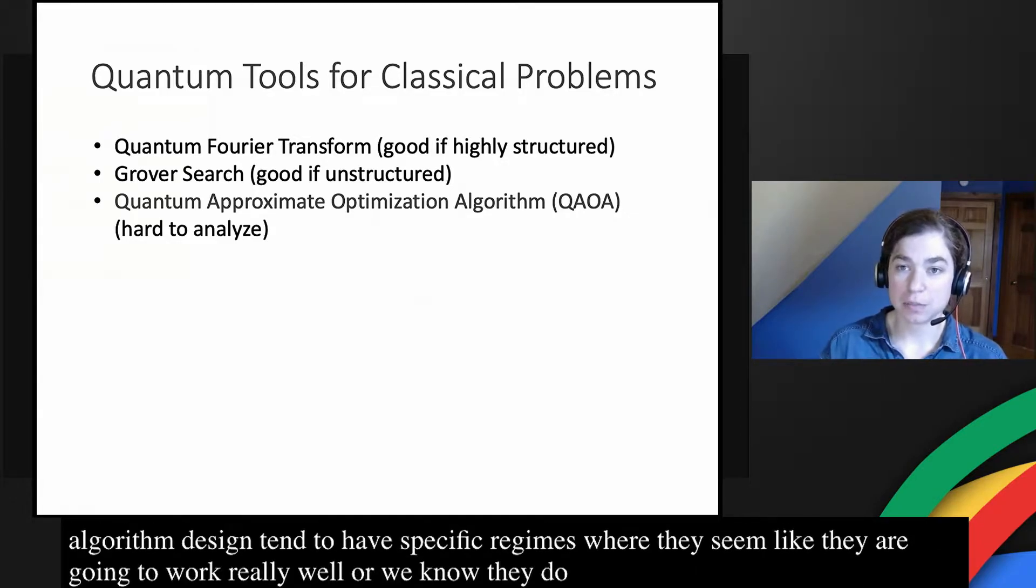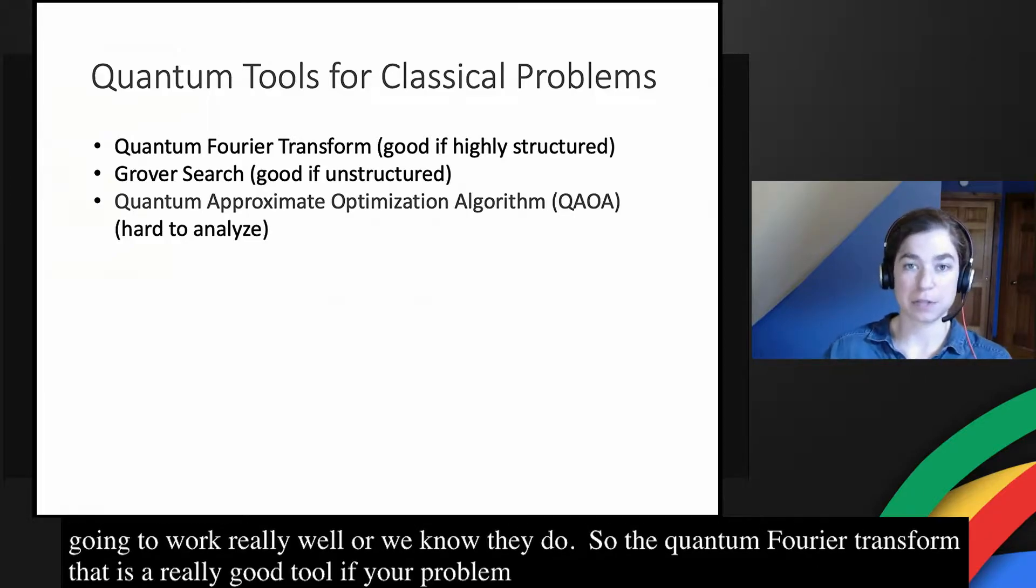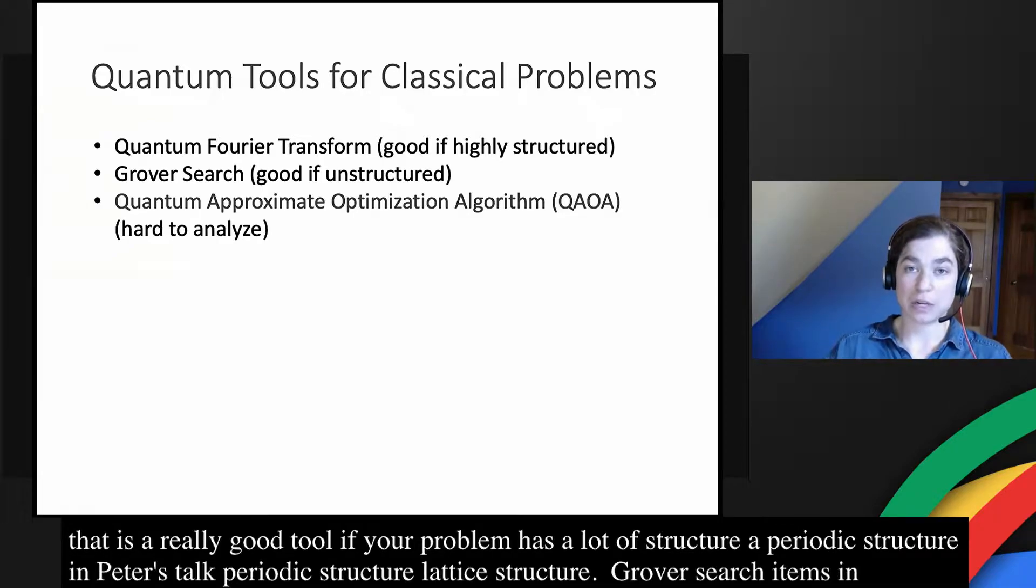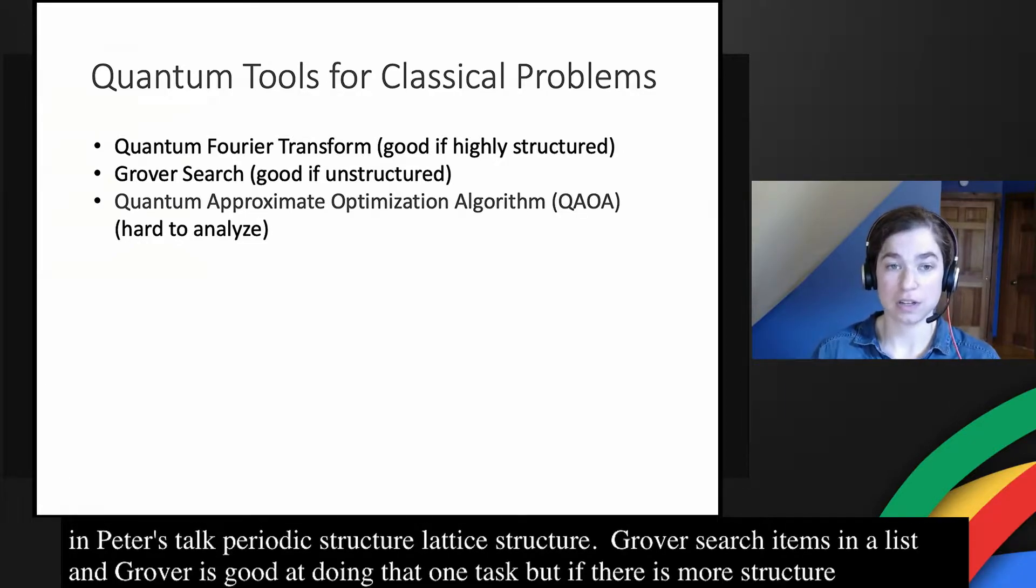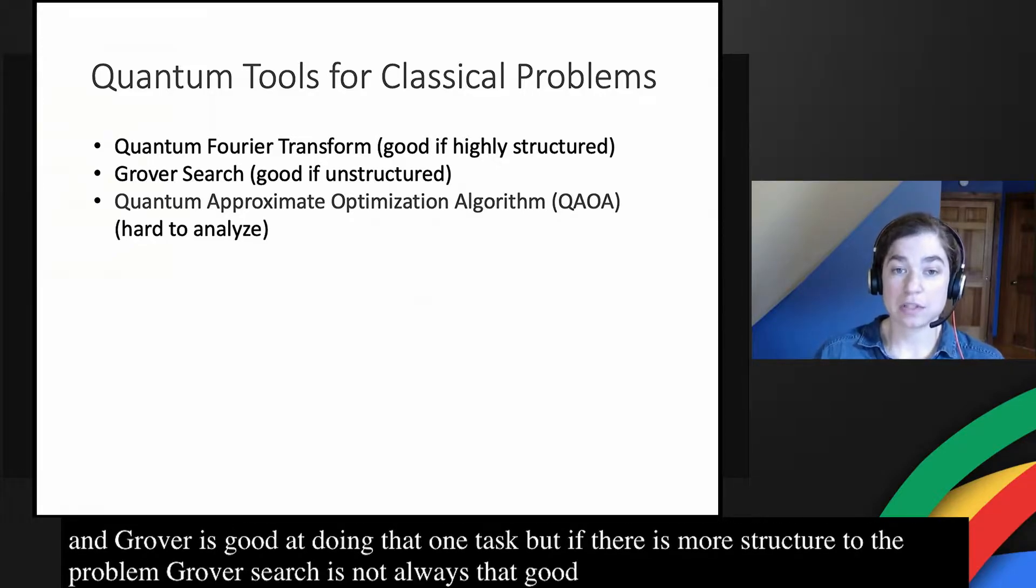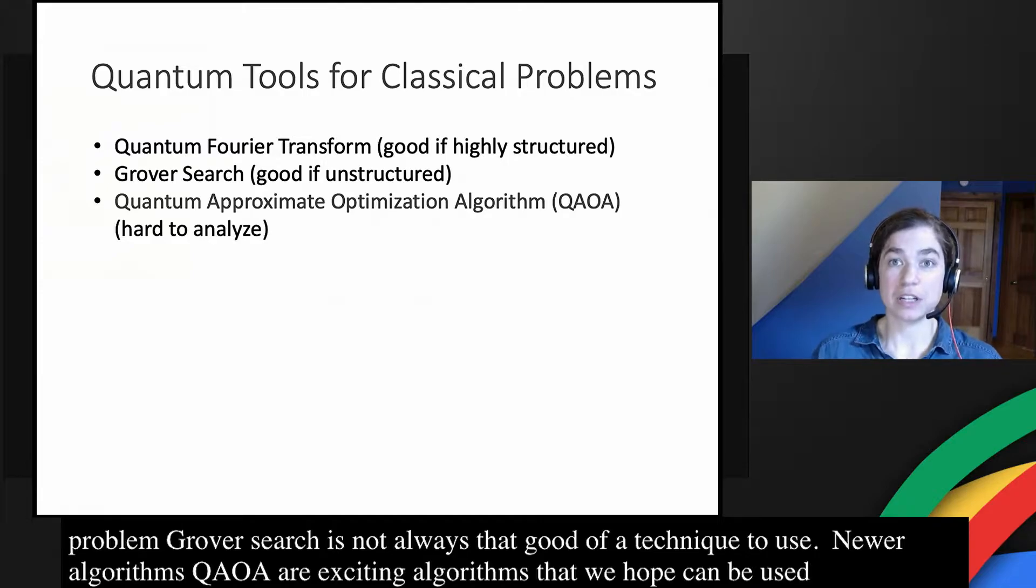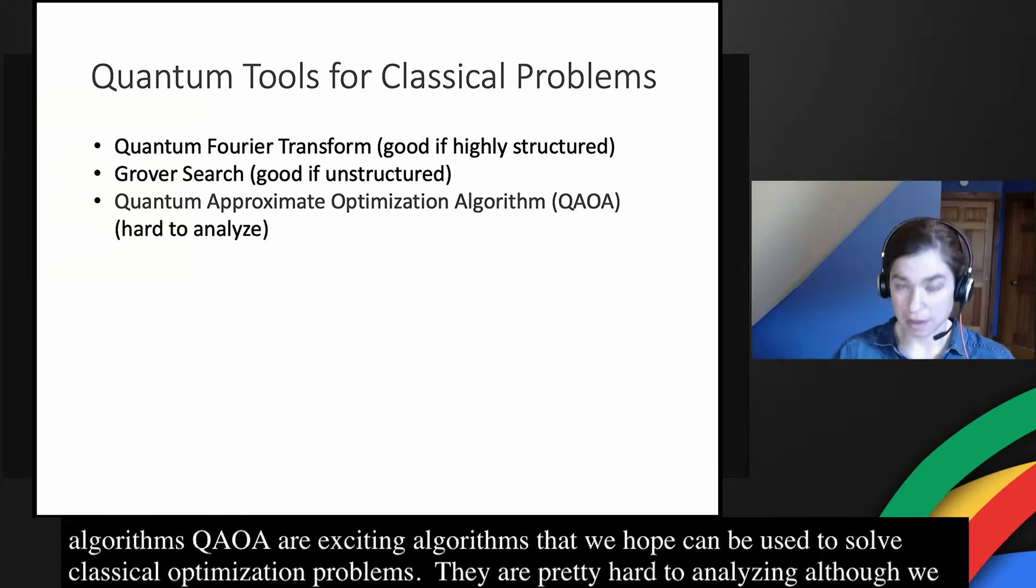The quantum Fourier transform is a really good tool if your problem has a lot of structure, especially some kind of periodic structure. Grover's search searches for an item in an unordered list, and is very good at that one task, but if there's more structure to the problem, then Grover's search is not always that good of a technique to use. Newer algorithms like QAOA are really exciting algorithms that we hope can be used to solve classical optimization problems, but they're pretty hard to analyze, although we're continuing to make progress.